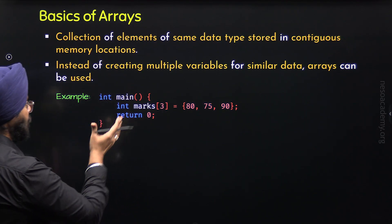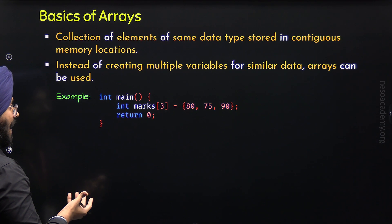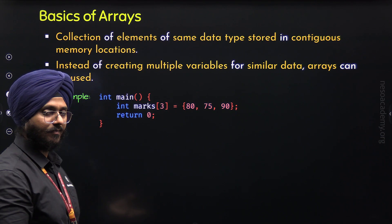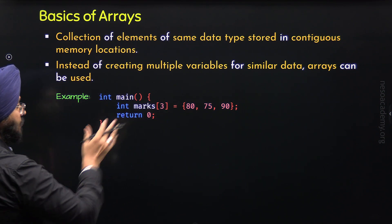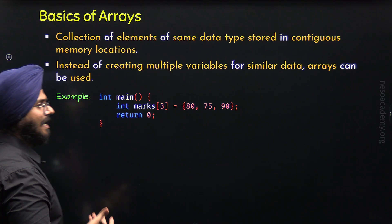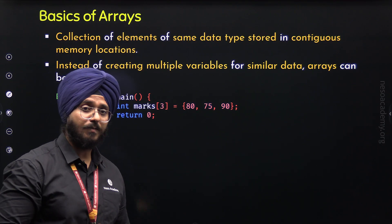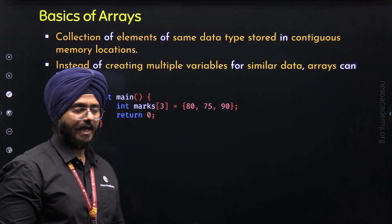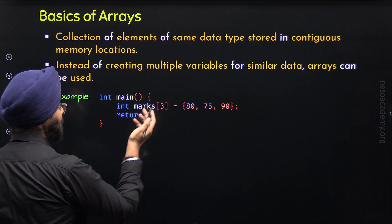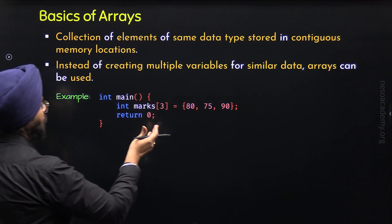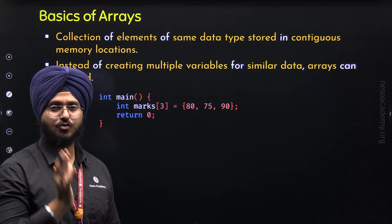An array is quite beneficial because it makes our code more readable and short. Let us assume we want to store marks of 100 different subjects. We do not have to create 100 different variables for this purpose — this will be quite cumbersome. Instead, we can create an array, providing the size as 100 and then provide all the marks. I hope this is completely clear to you.